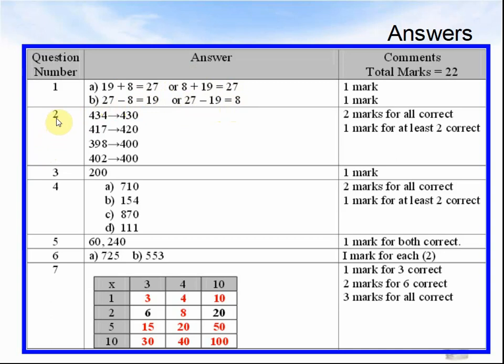Question 2. 434 rounds to 430. 417 rounds to 420. 398 rounds to 400. 402 rounds to 400.